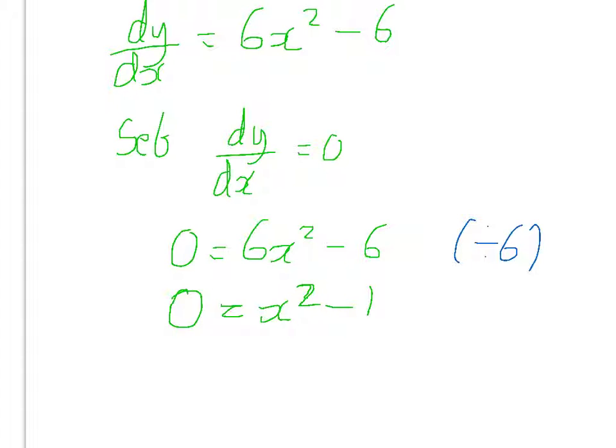Remember, 1 is a square number. So if we factorise this, you should get 0 equals x plus 1 and x minus 1.